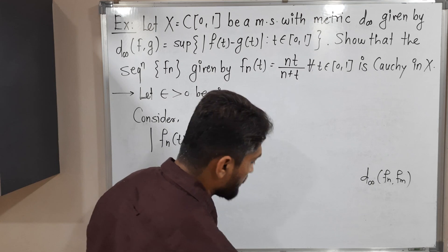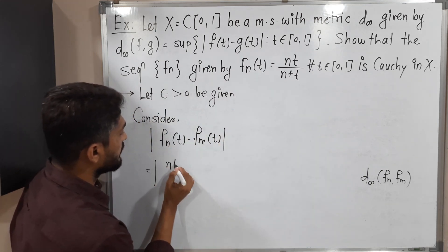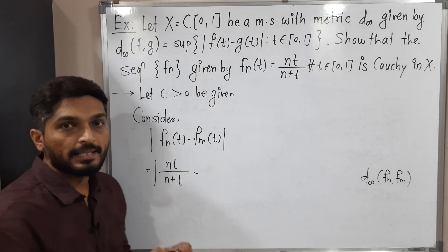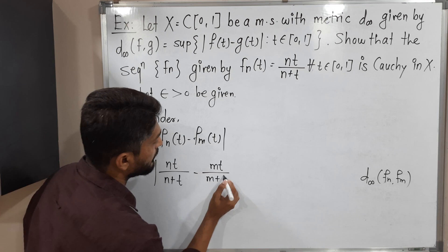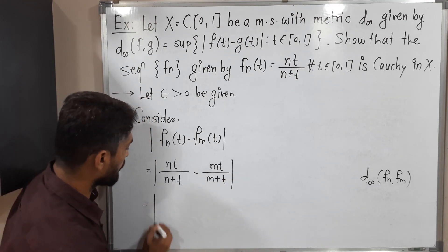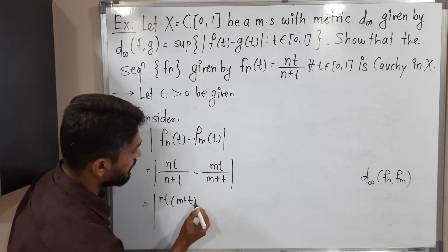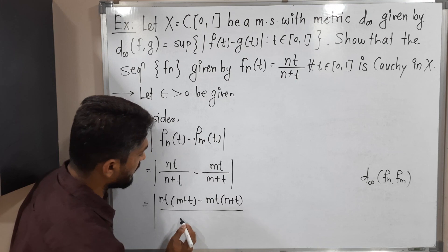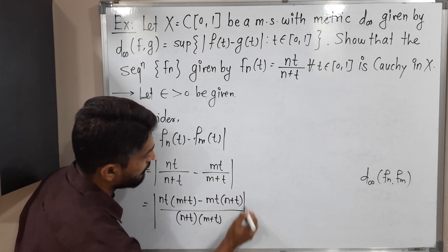Let us put the values. What is Fn(t)? Fn(t) is nt/(n+t), minus Fm(t), which is mt/(m+t) — at the place of n, I write m; the remaining part is the same. Now what will I do? I will cross multiply: mod of [Nt(m+t) minus Mt(n+t)] divided by (n+t)(m+t), mod complete.